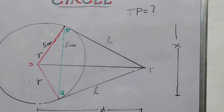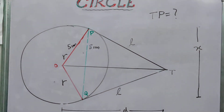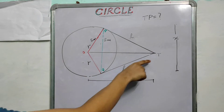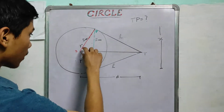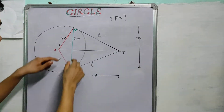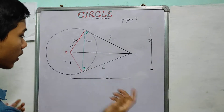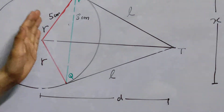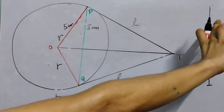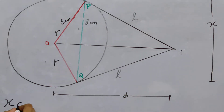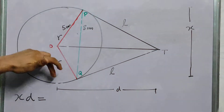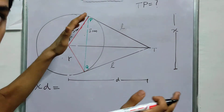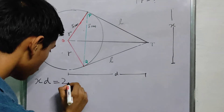Give this a try using the Ptolemy theorem. Let us apply the Ptolemy theorem to the cyclic quadrilateral O, Q, T, P. We have proved it is cyclic because the sum of opposite angles equals 180 degrees — both tangent angles are 90 degrees, summing to 180. The Ptolemy theorem gives us: product of the two diagonals, X times D, equals L times R plus L times R, which is 2LR.